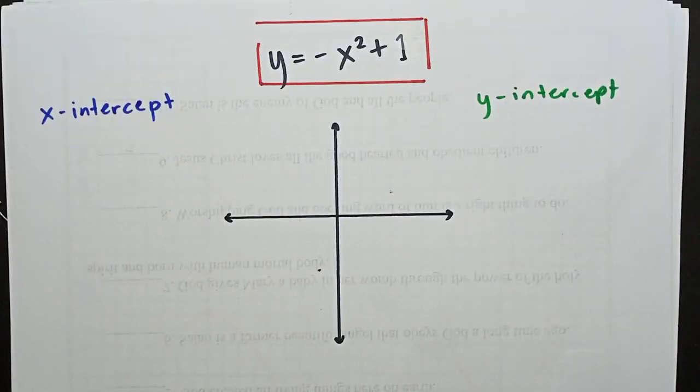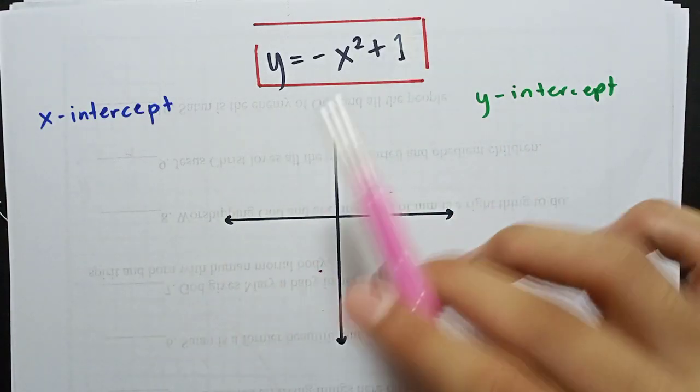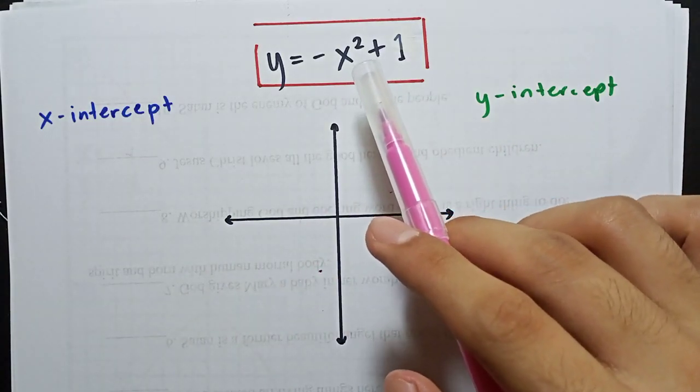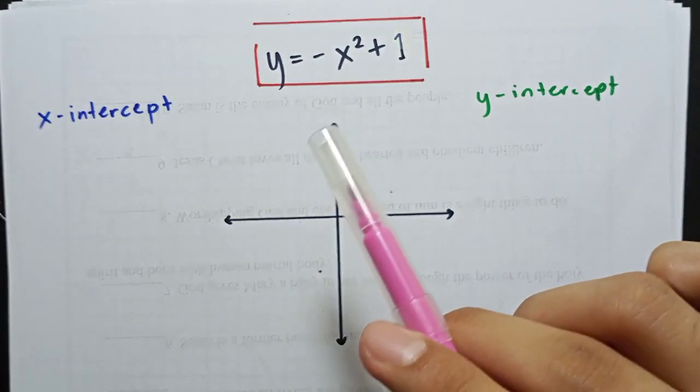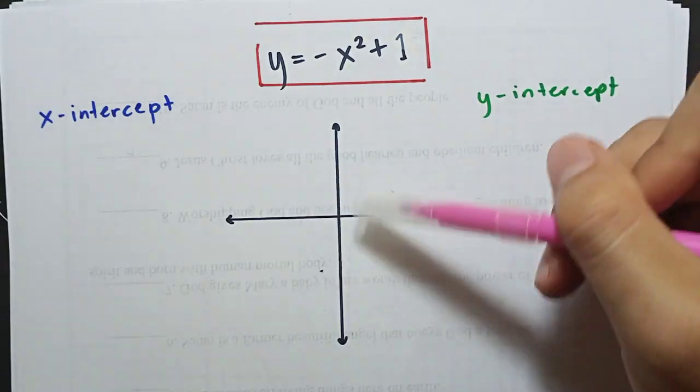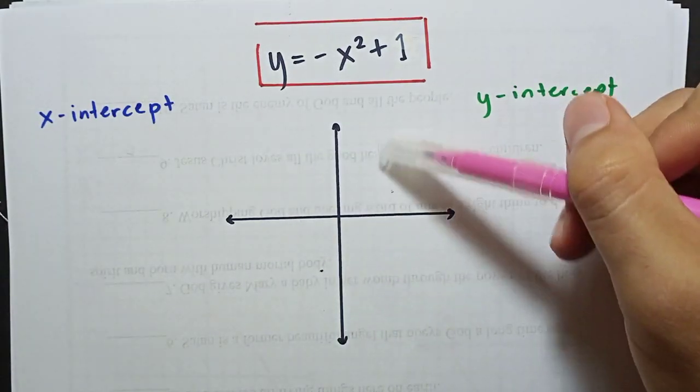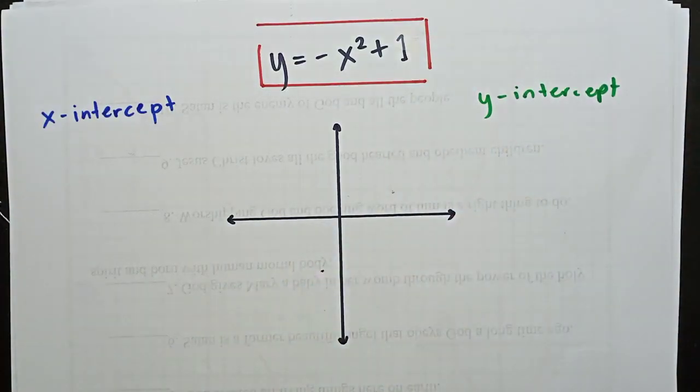Next, y equals negative x squared plus 1. And as you can see, our highest degree in this equation is 2. When the degree of the equation is 2, meaning it is quadratic. When your function is quadratic, the shape of your graph is a parabola. Like this shape. Remember?